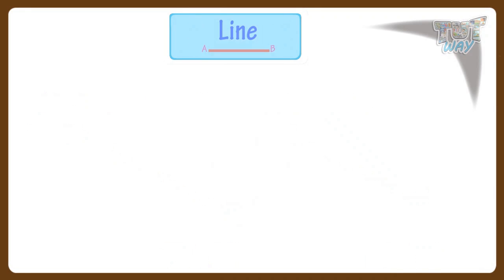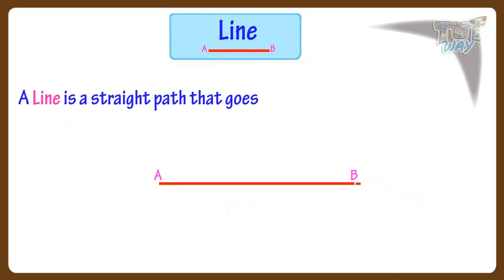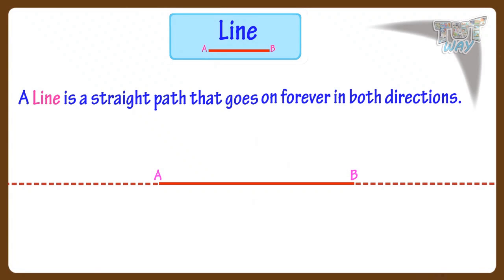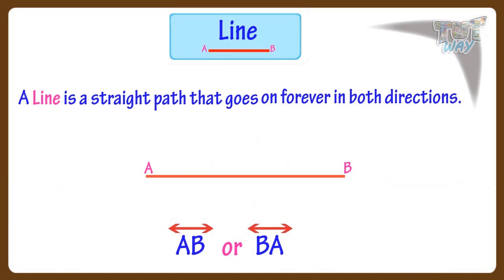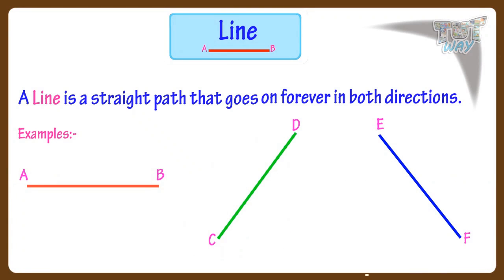Let's see what is a line. A line is a straight path that goes on forever in both directions. That is, there is no end point on a line, unlike a line segment. This is line AB or BA. This symbol is made on top of the name of a line, denoting that the line goes on forever in both directions with no end point. Here are more examples of lines, and this is the way we write them.